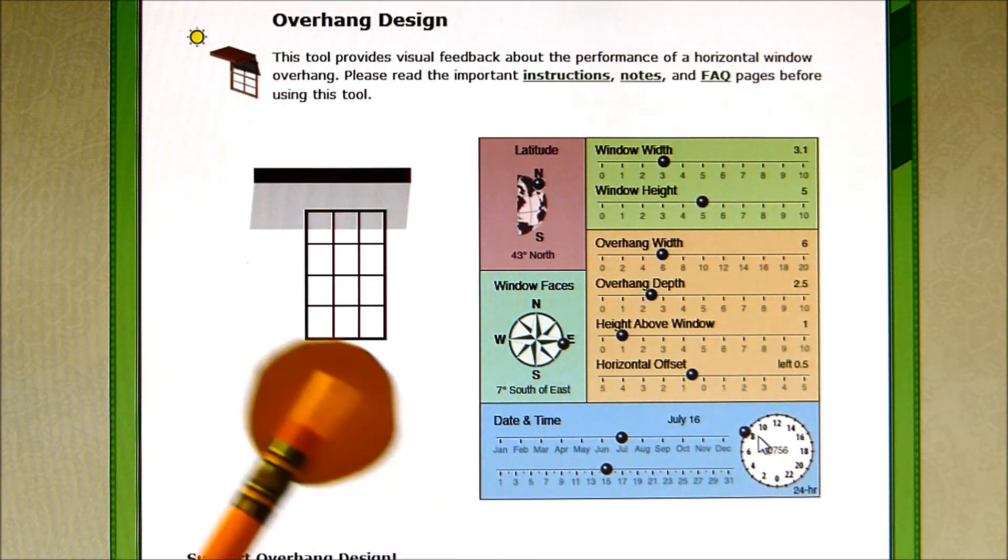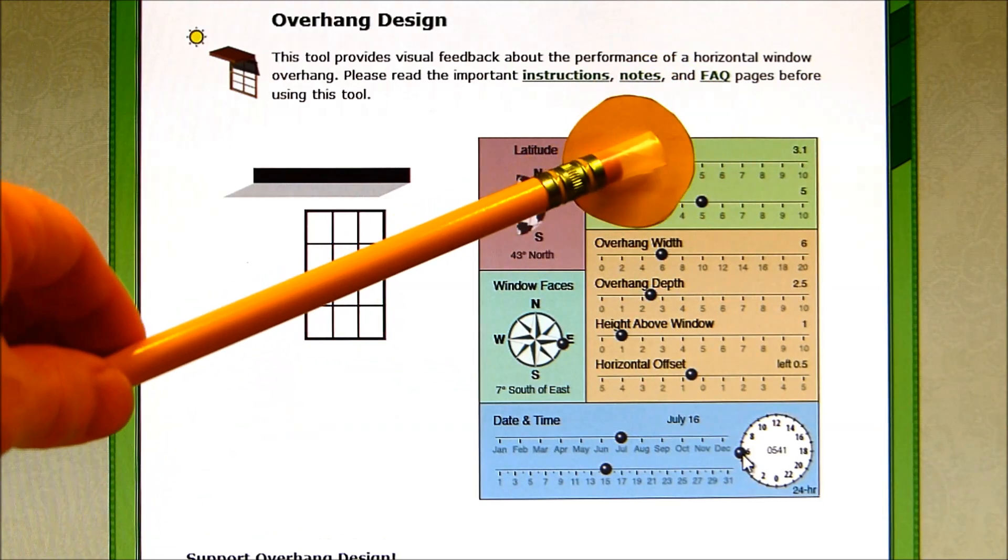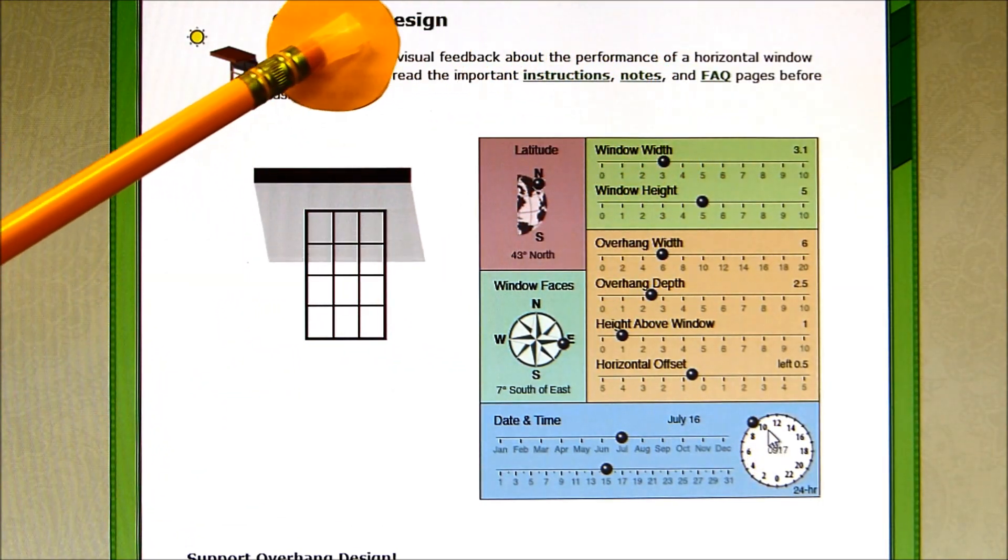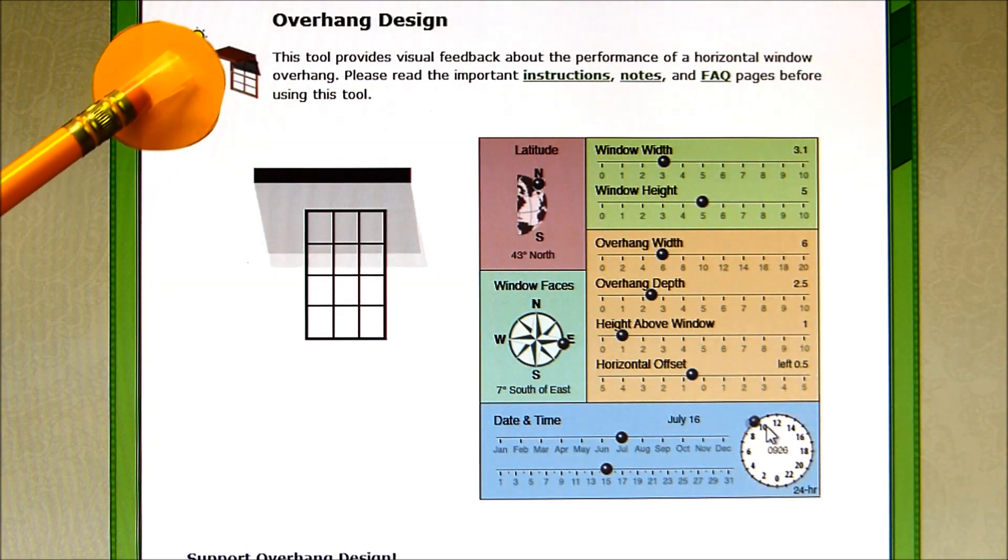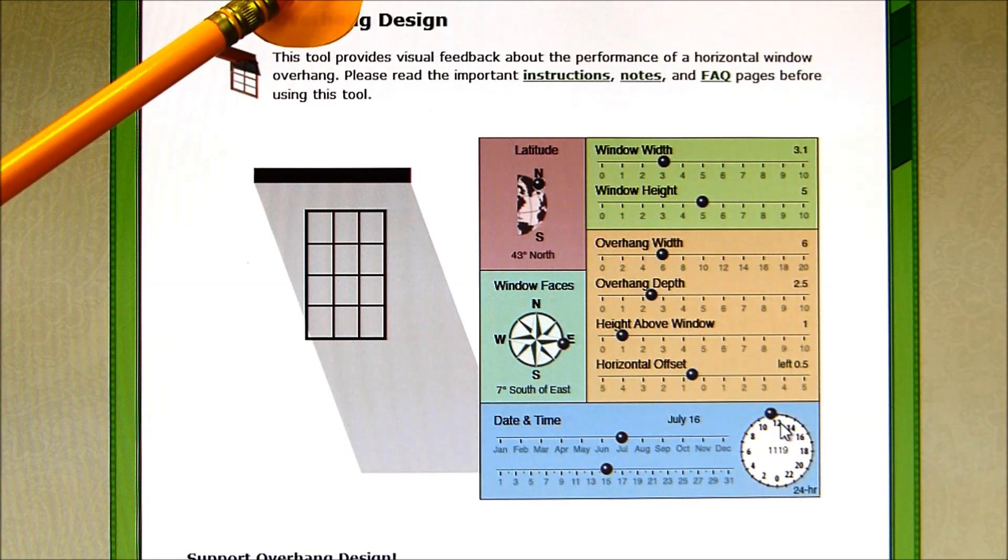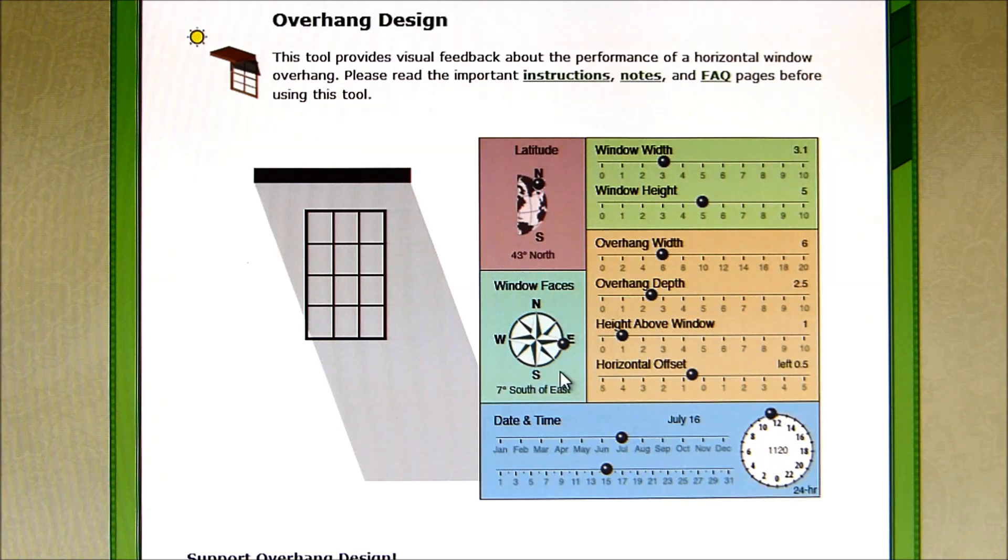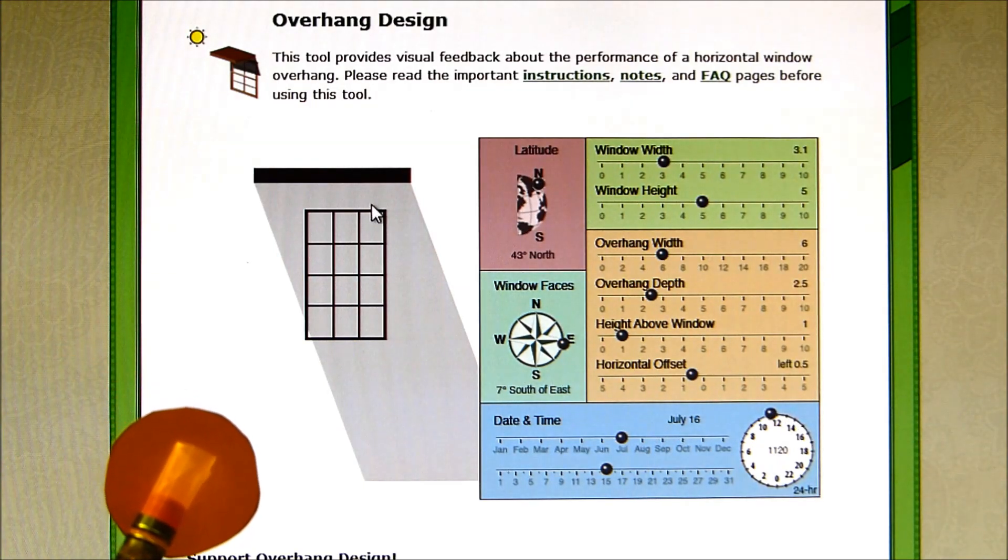Again, coming up over here, you can see that we end up getting quite a bit of shading. This is in July, so the sun is very high overhead.